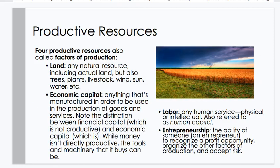Productive resources. There are four productive resources, also called factors of production. Land: any natural resource, including actual land, but also trees, plants, livestock, wind, sun, water.